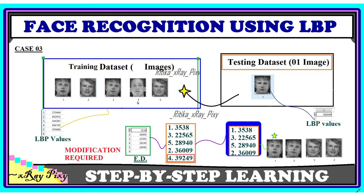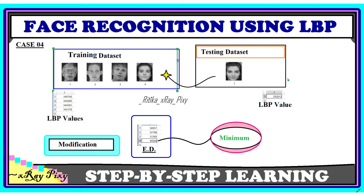Since no exact match is found with Euclidean distance equal to zero, we do a modification in the code: instead of looking for zero, we select the image with the minimum Euclidean distance value. Among all the computed distances, the first image has the minimum value, so we consider it the match for the query image. This modification allows the computer to identify the same person with different facial expressions.